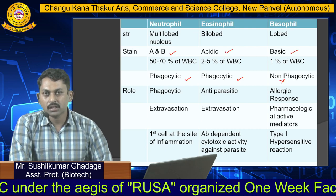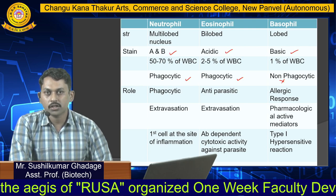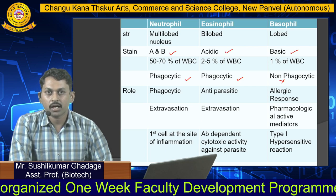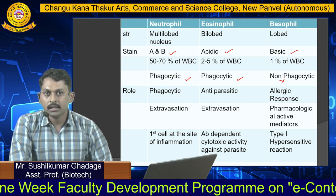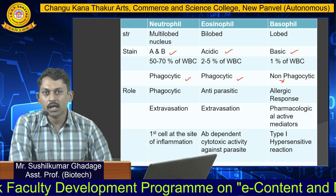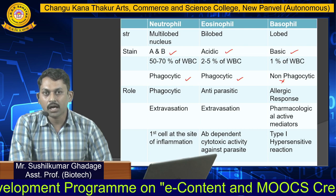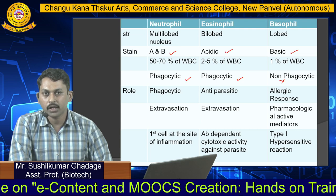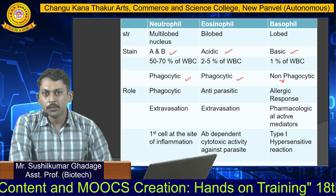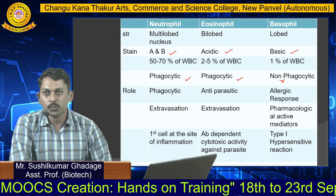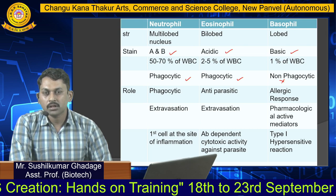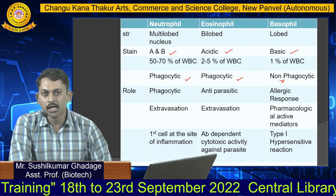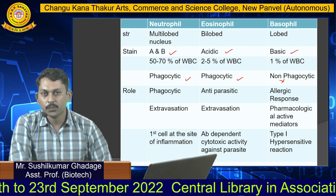Basophils have a major role in allergic responses, such as allergy to pollen grains or penicillin. In their cytoplasm, they contain pharmacologically active mediators, and they play a major role in type 1 hypersensitivity reactions. When the same allergen enters the body a second time, basophils are involved in showing the allergic reaction.